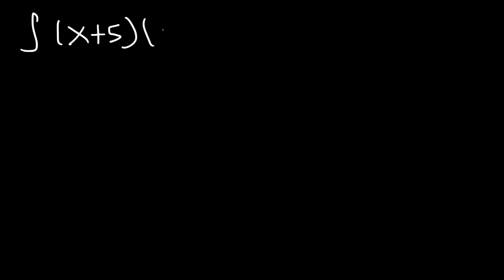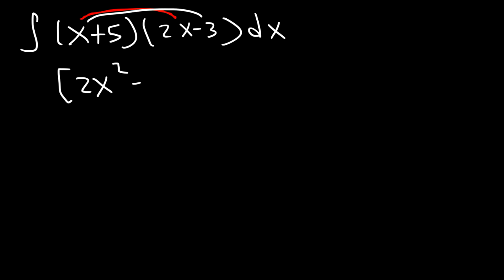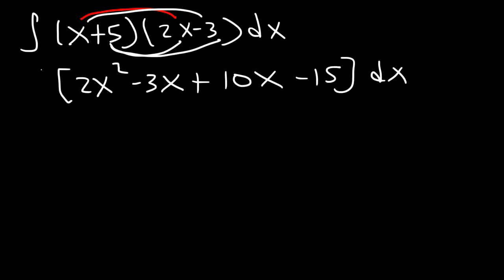Let's find the indefinite integral of x plus 5 times 2x minus 3. We can't use a product rule for integration, so if you see a problem like this, it's best to FOIL before you integrate. So x times 2x is 2x squared, x times negative 3 is negative 3x, 5 times 2x is 10x, and 5 times negative 3 is negative 15. Combining like terms: negative 3x plus 10x is 7x.